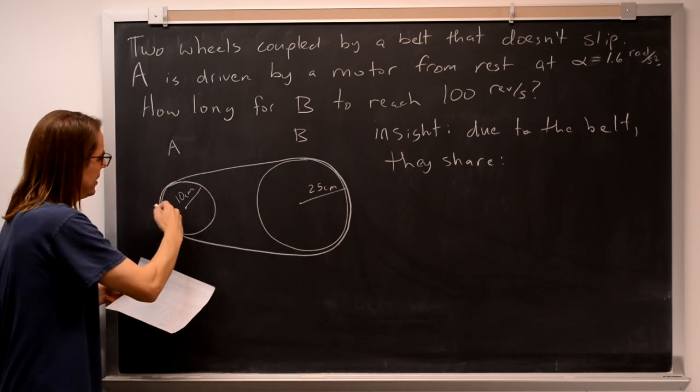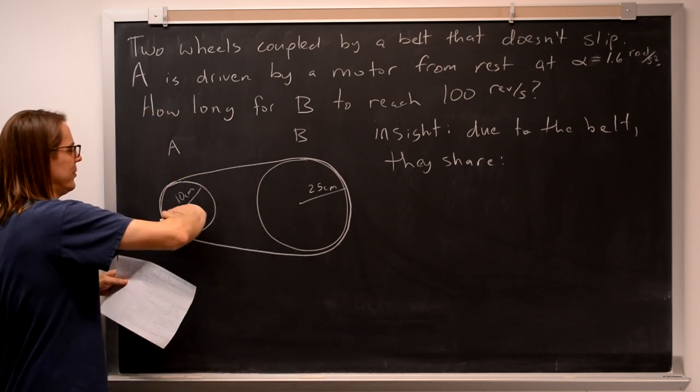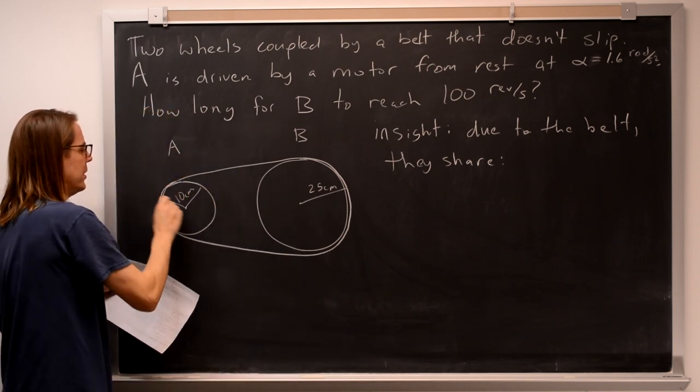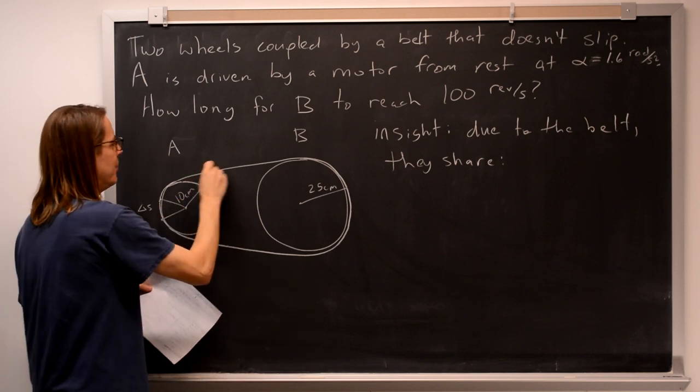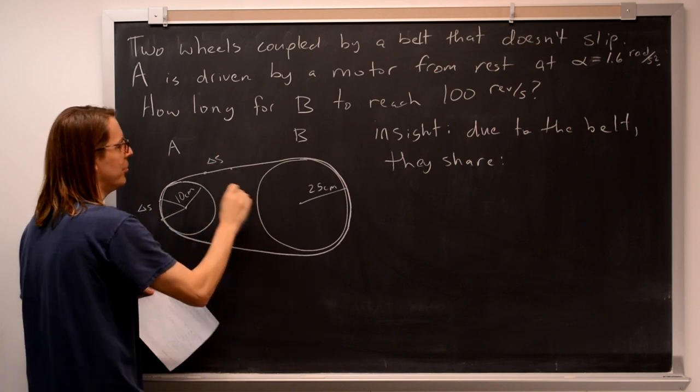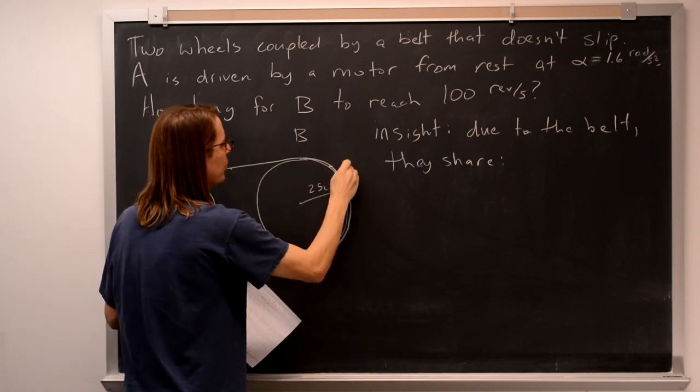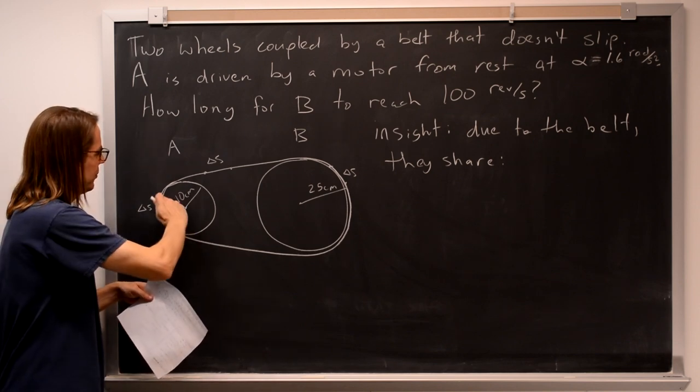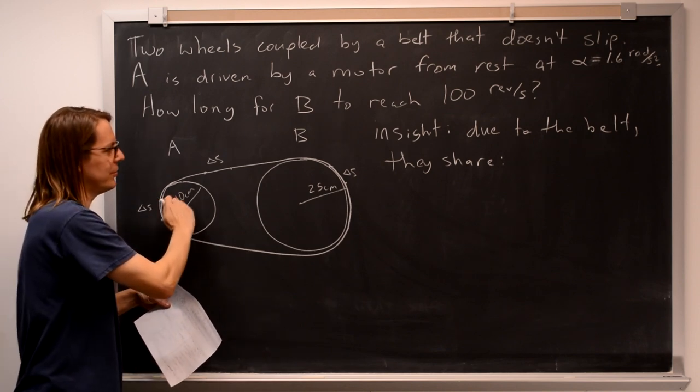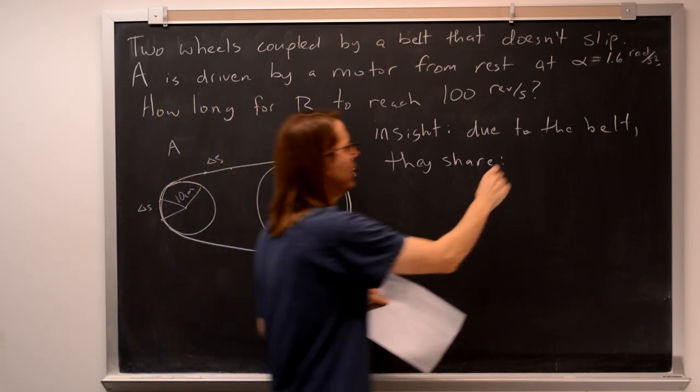Any change in arc length here, so say this turns through some arc length delta S, that means this point on the belt went to this point on the belt. That means this point on the belt went to that point on the belt. They share delta S. If in some time this goes through some arc length along the surface, this goes through the same arc length along the surface.